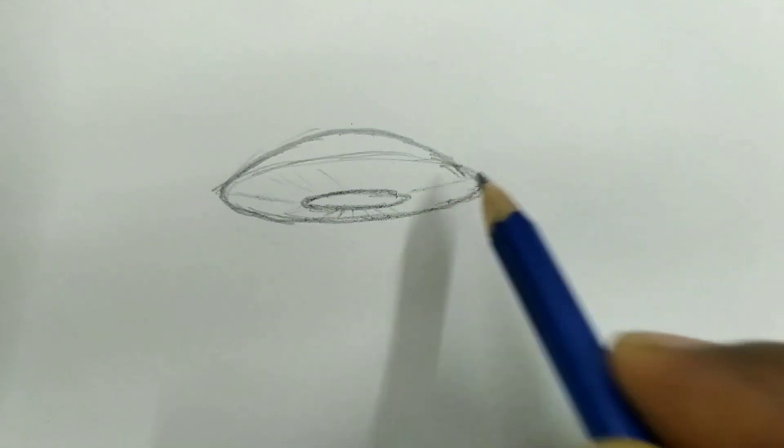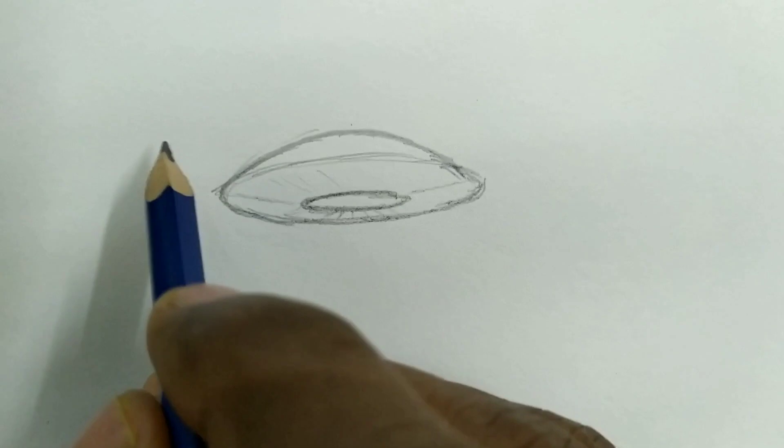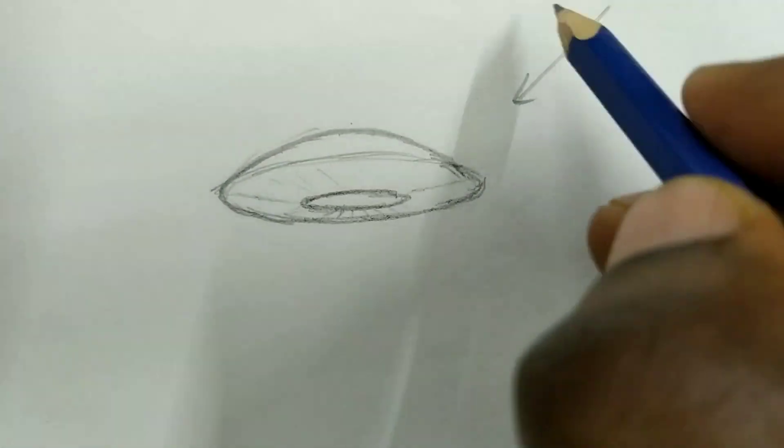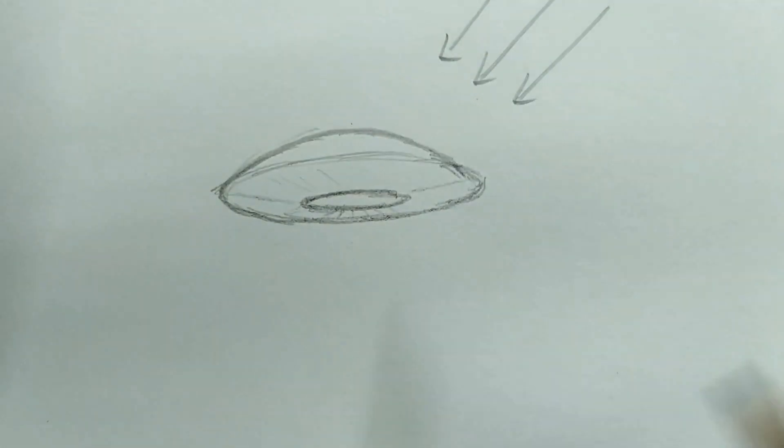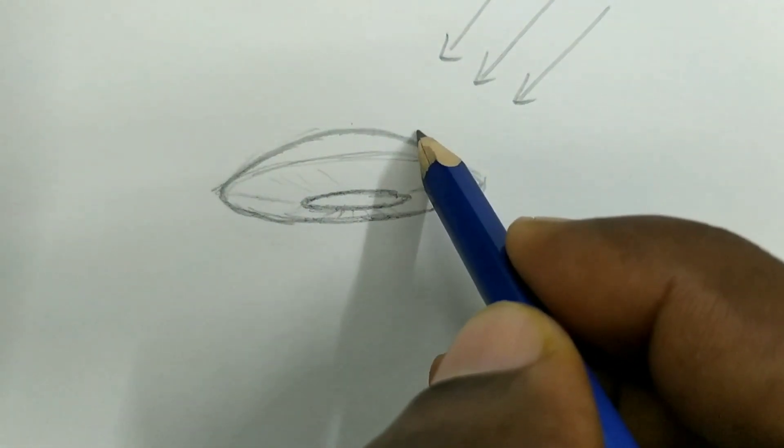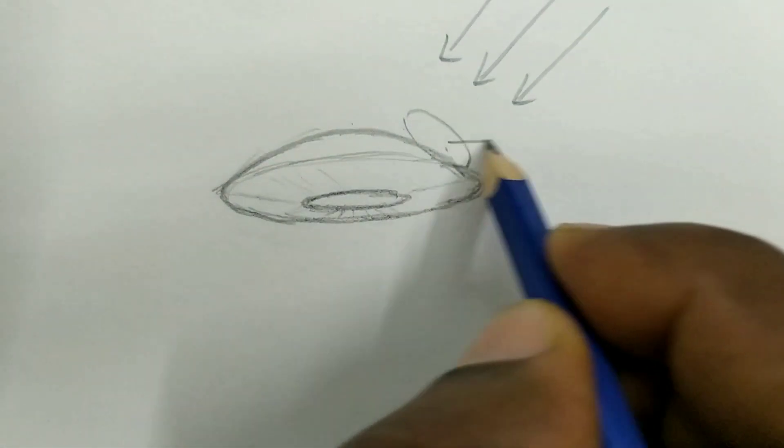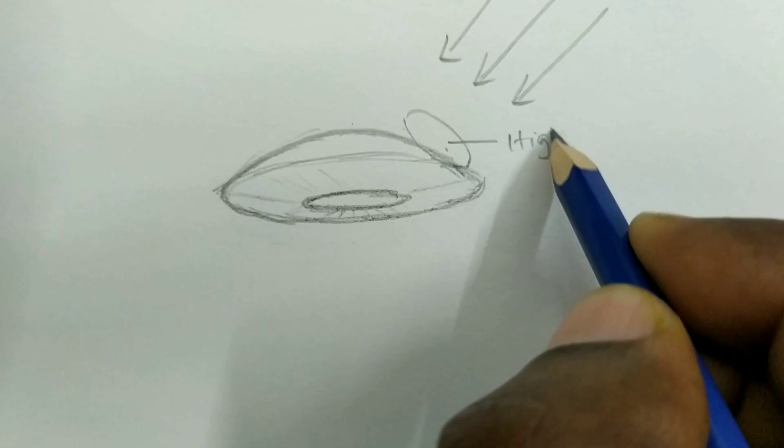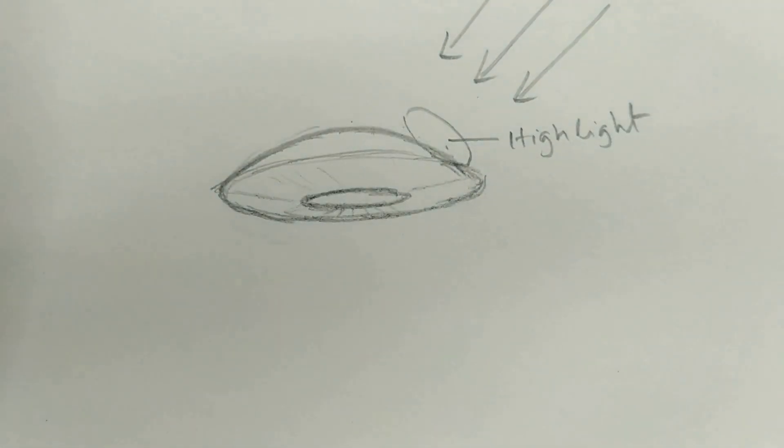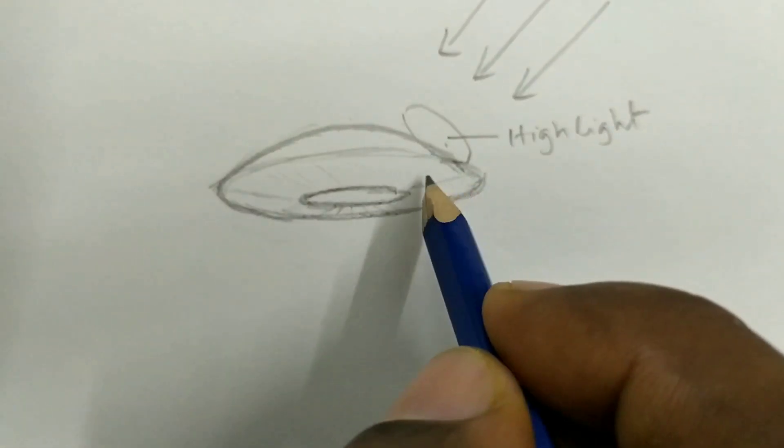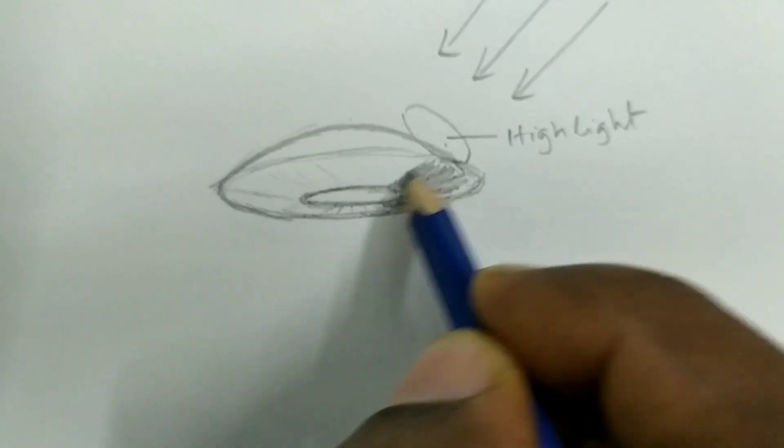And this is the cornea which is transparent. So if a light comes from this side, okay just imagine if a light comes from this side, then that will create a highlight on this area. As the cornea looks like saucer shaped, the area which is beneath the highlight will be the darker area.